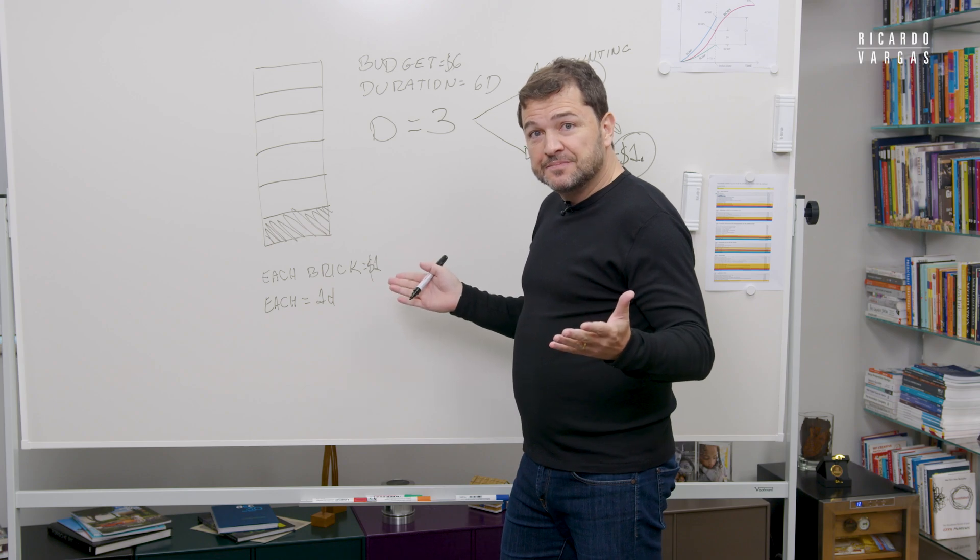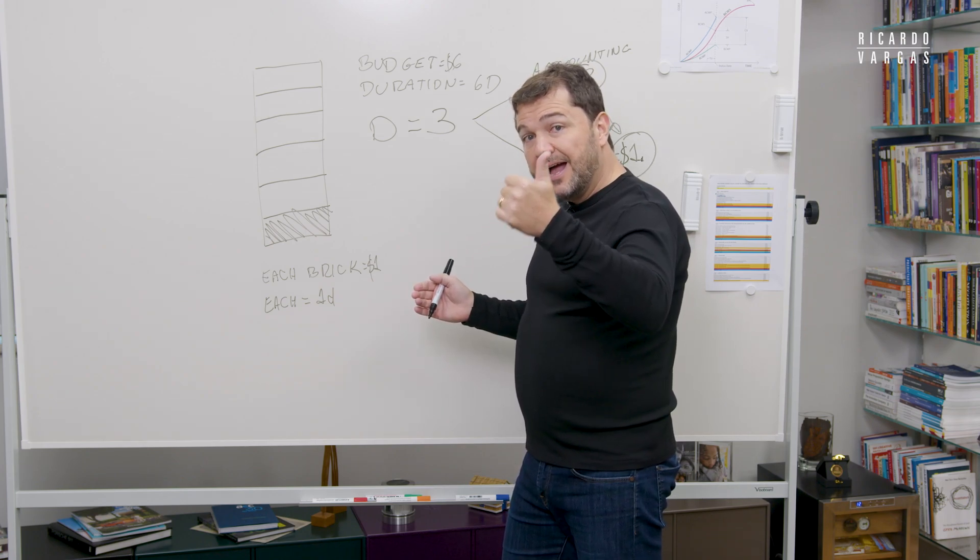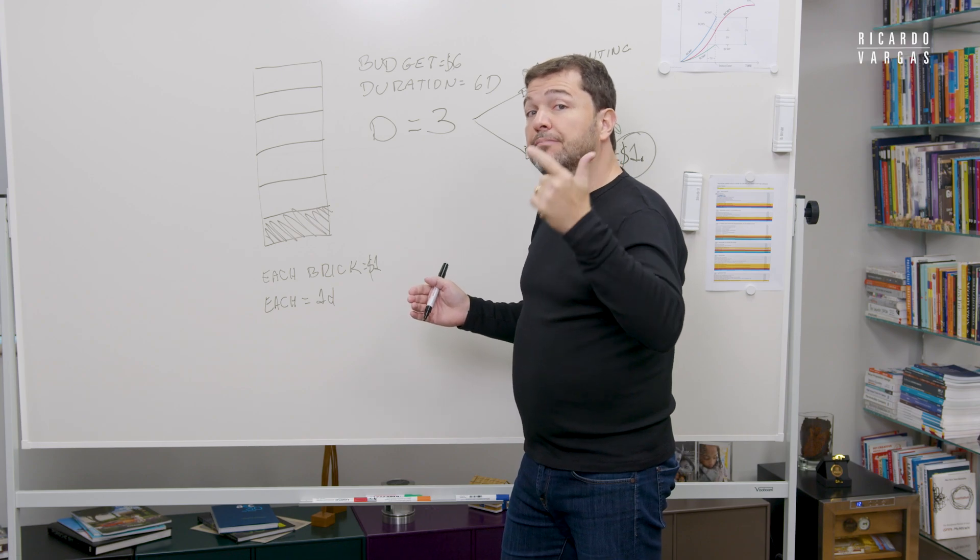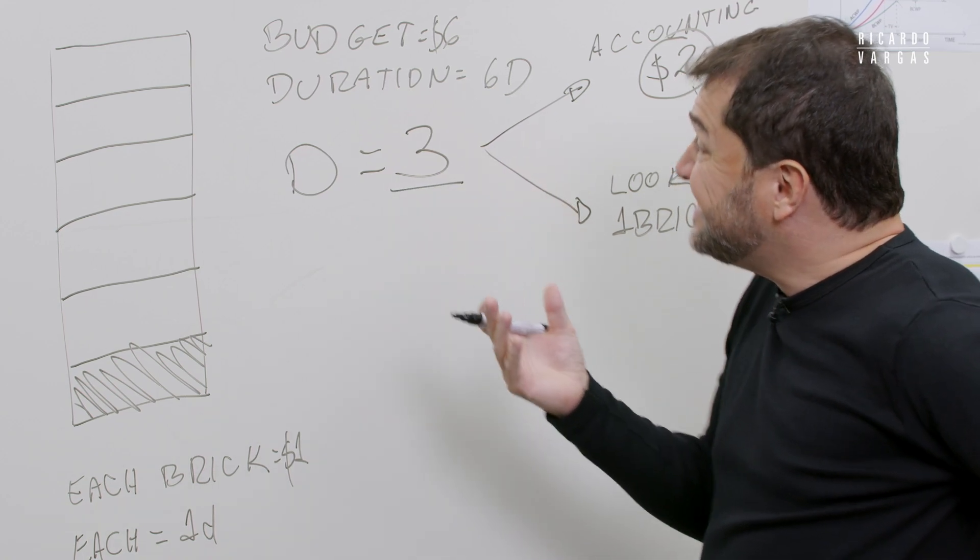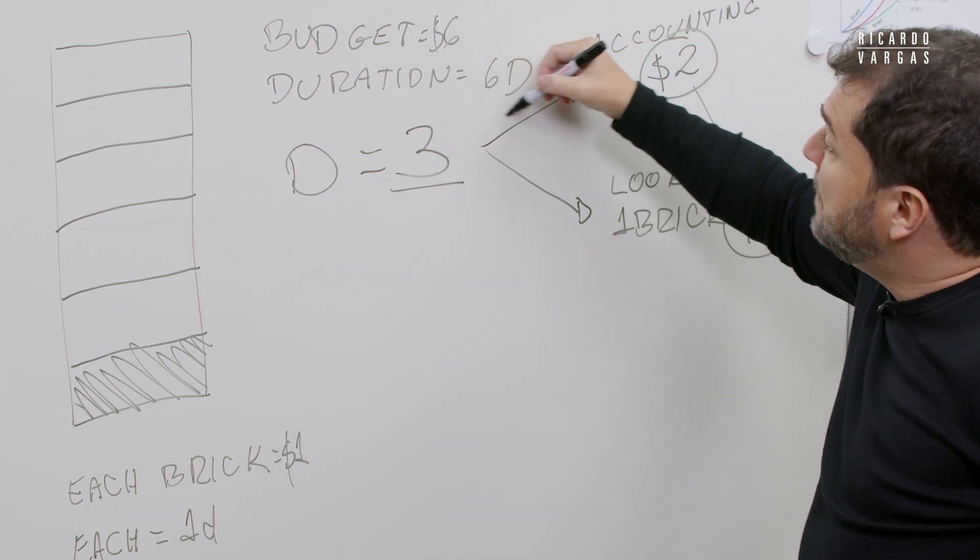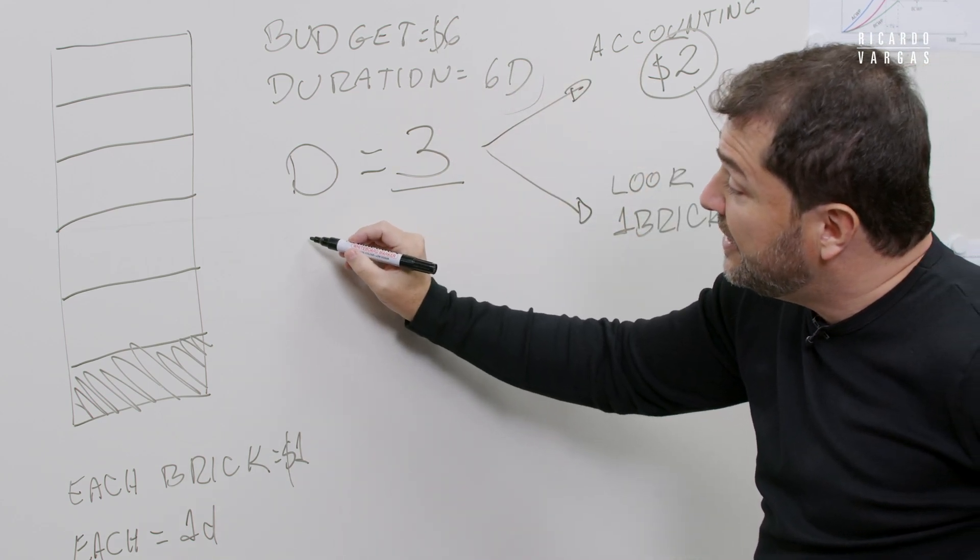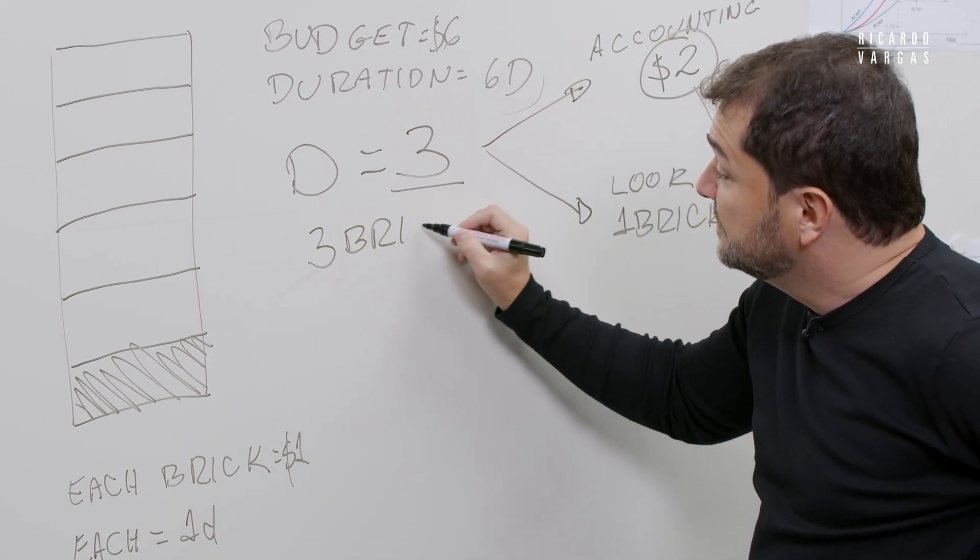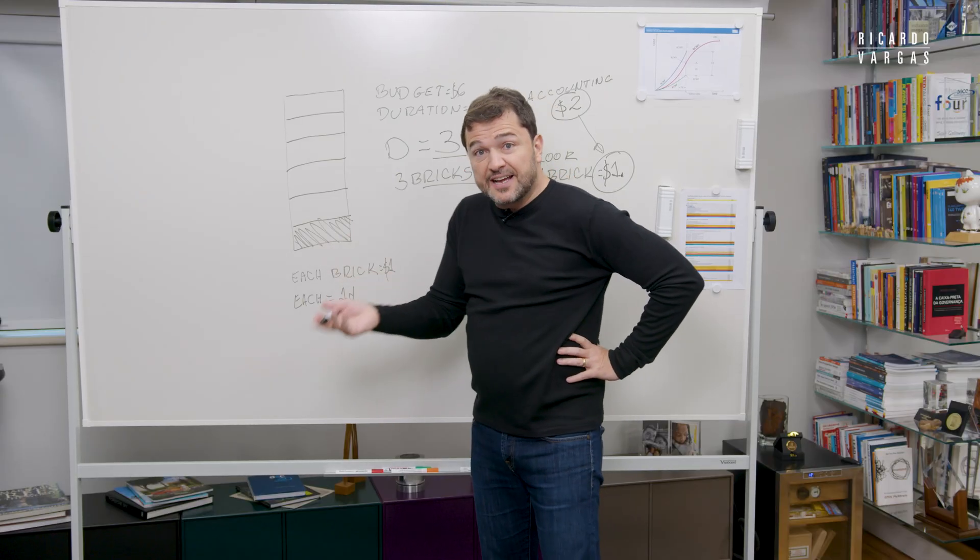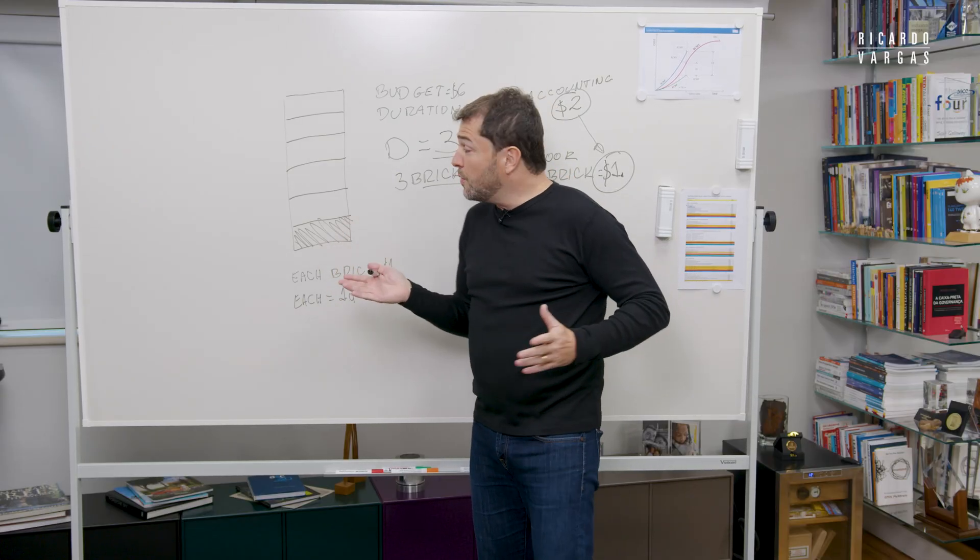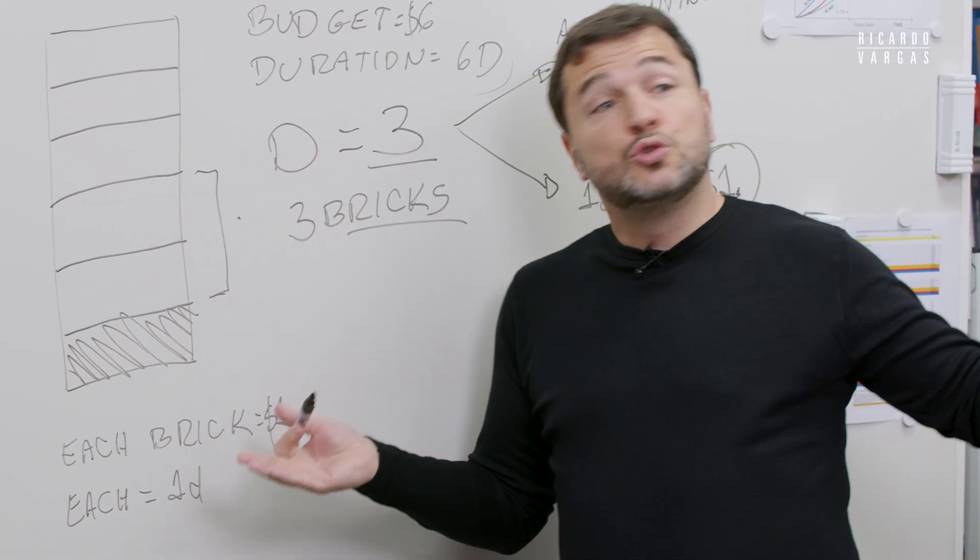What is happening here? You were late and you were over budget. Why were you late? Because on day three, what is expected? If you were planning to build six bricks in six days, on day three means three bricks. But how many bricks did you see physically? Just one. So you were late, two bricks, which means $2.